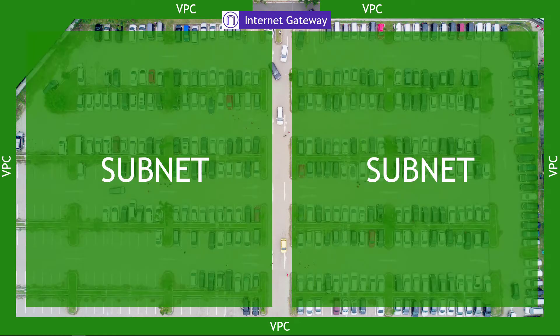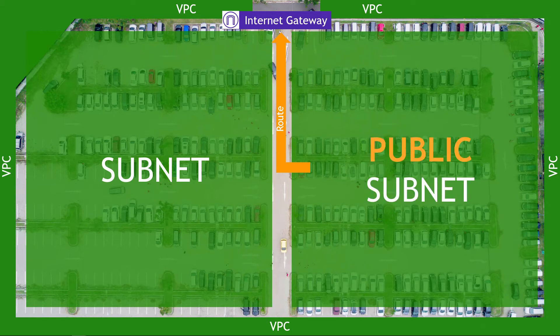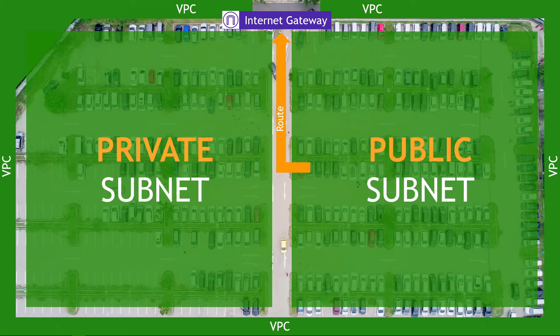Inside the VPC, we have logically separated areas — for our example, the left and the right of the parking lot. These are called subnets in AWS networking terms, and generally they're used for different purposes. One subnet has a route to get out to the internet — if that's the case, this is a public subnet. The other subnet, the one that doesn't have the route to the internet, that's a private subnet.